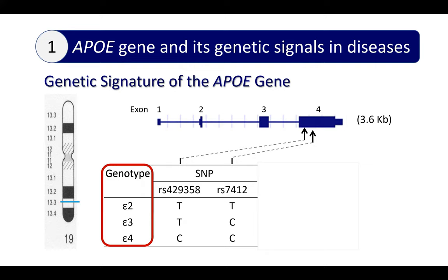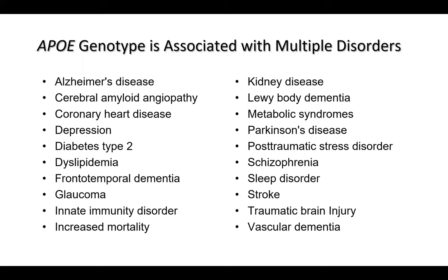This ApoE genotype has been studied heavily with human diseases. Currently, there are more than 50 clinical disorders associated with this ApoE genotype. This is just part of the large list. I'm going to take two examples: one is coronary heart disease, and another one is Alzheimer's disease.